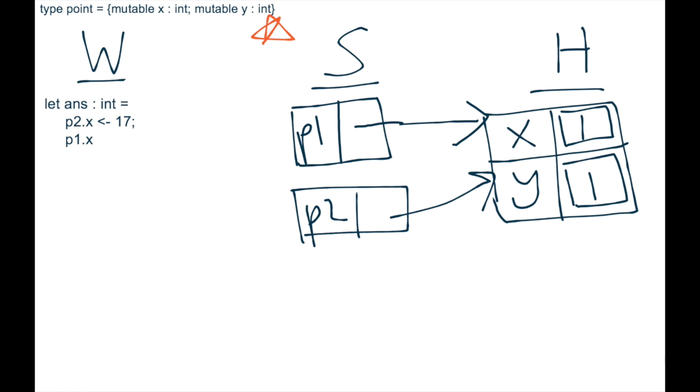So now that we have pushed P1 and P2, let's analyze this next expression. Let ans, which is an int. So we need to get this whole entire expression on the right down to be a value. So the first thing that we see is this line, give P2.x 17.